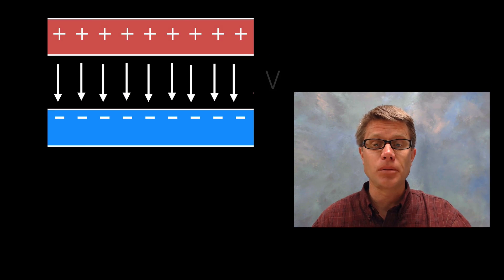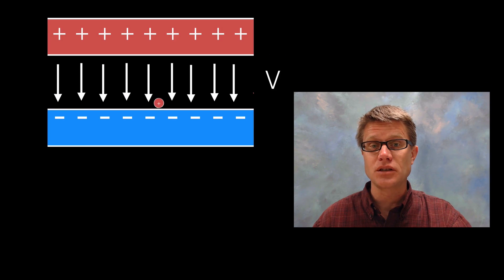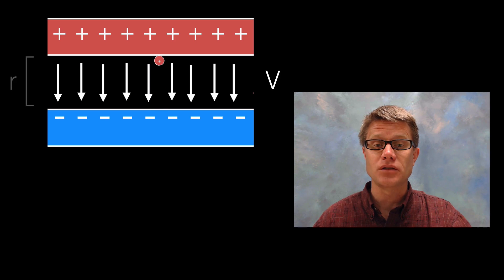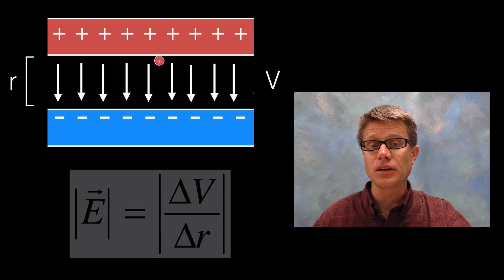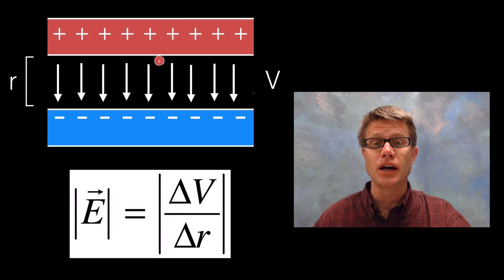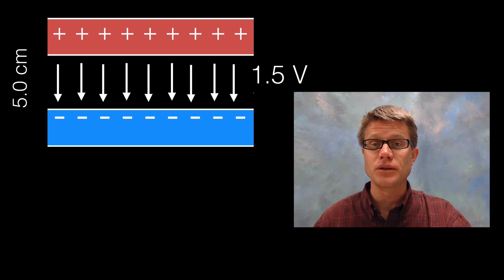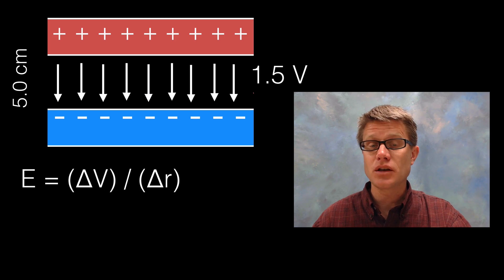If you have parallel plates like this we've got the voltage and displacement. Voltage, remember, is a measure of how much work is done to move a test charge from one place to another. If we're figuring out the electric field strength, all we do is divide the voltage by the displacement. If the voltage is 1.5 and the distance between the two is 5.0 centimeters, we just use this equation.